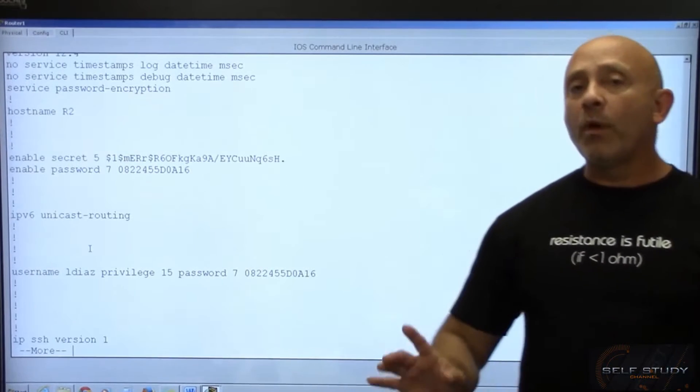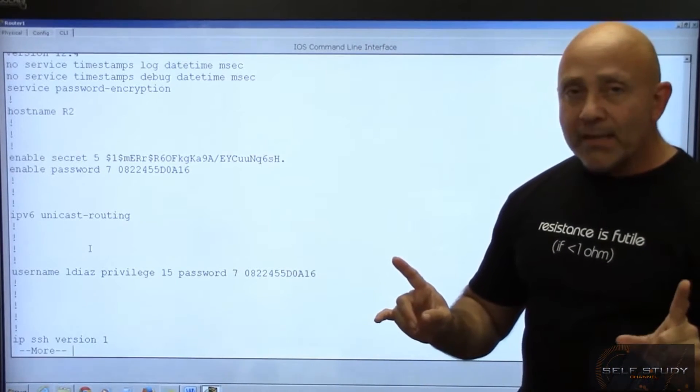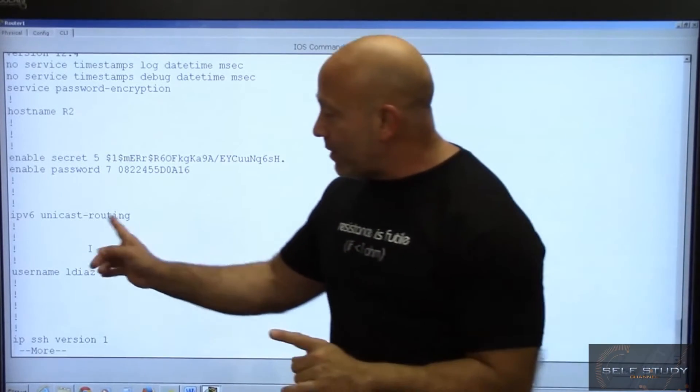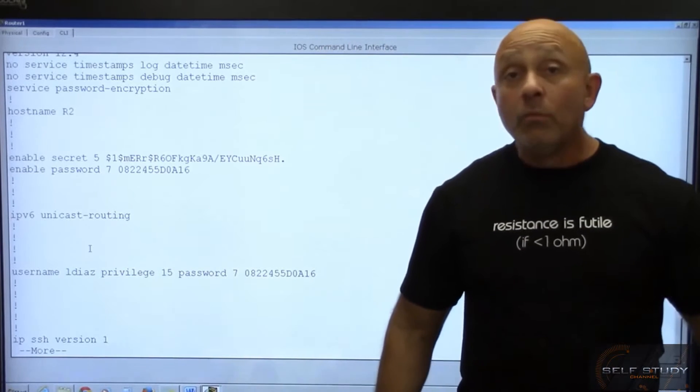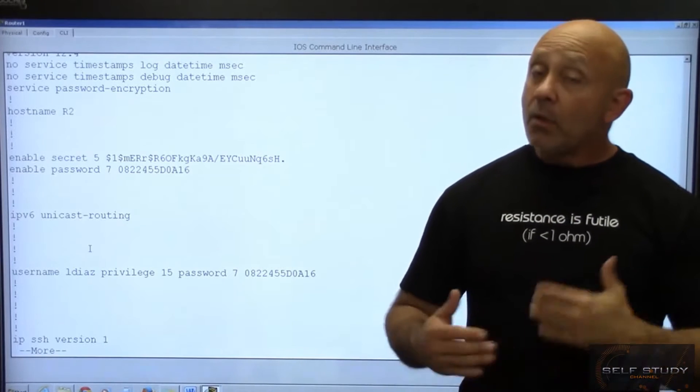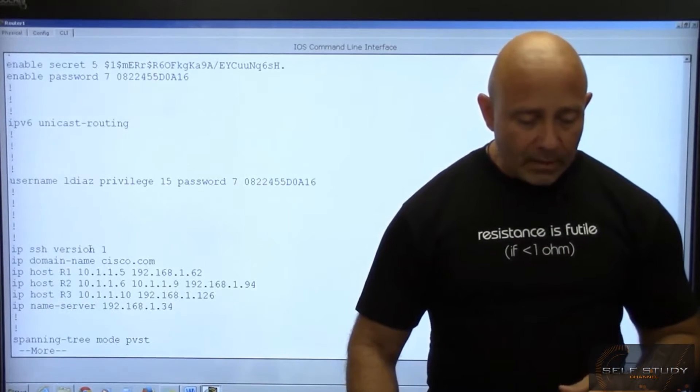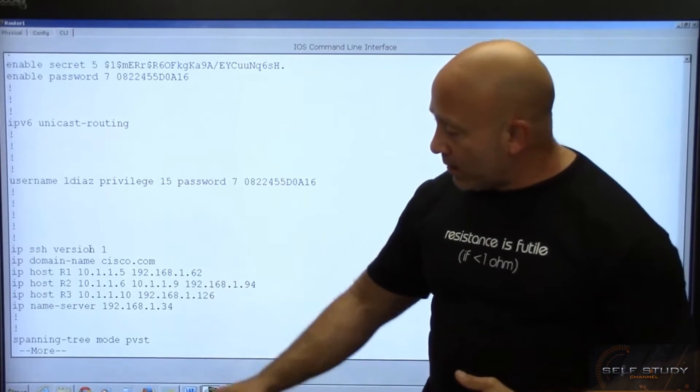I'm going to go ahead and do a show start to show you. Now remember, when you are routing an IPv6, one of the first things that you need to type is IPv6 unicast routing. You must type that or else you're not going to be able to route an IPv6.